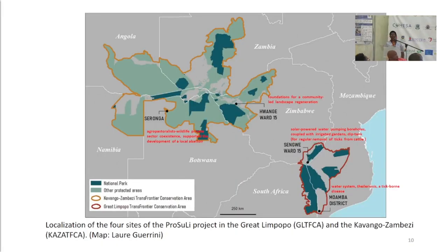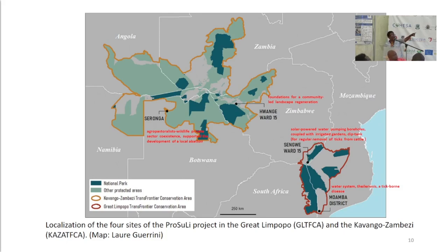In terms of actual locations, PROSULI was implemented in two TFCAs. The large green area bounded by the brown boundary is the Kavango-Zambezi Transfrontier Conservation Area, straddling five countries. The other was implemented in the Great Limpopo Transfrontier Conservation Area further to the south, straddling three countries.